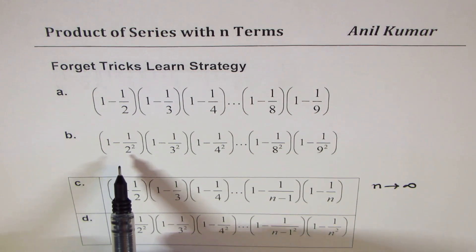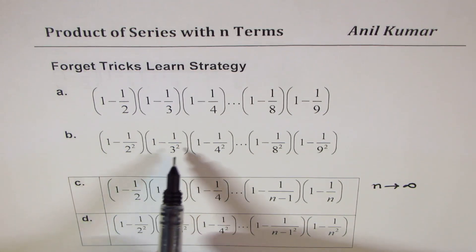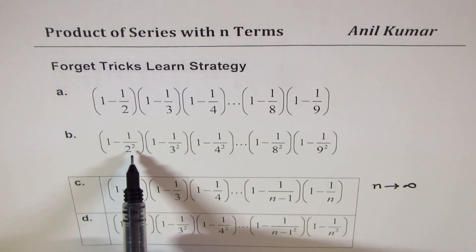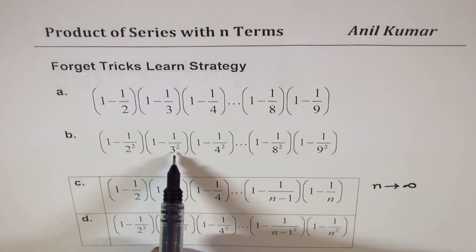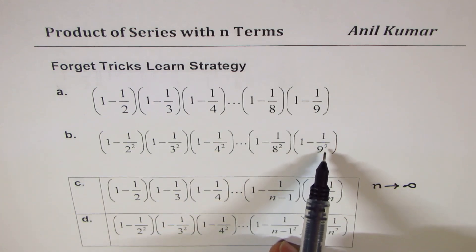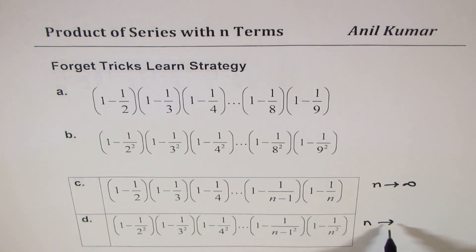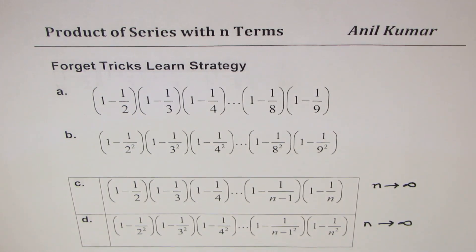Now, question number two here is that we are subtracting now reciprocal squares. So 1 minus 1 over 2 squared times 1 minus 1 over 3 squared, till 1 minus 1 over 9 squared, which we're going to extend to 1 minus 1 over n squared. And we'll also see the result what happens when n approaches infinity.